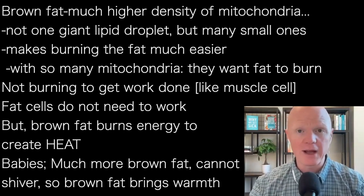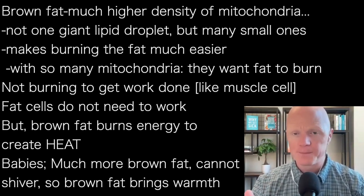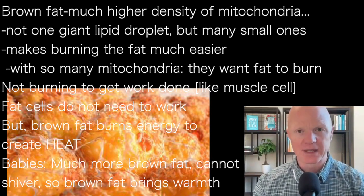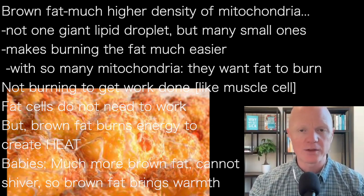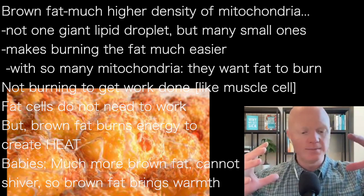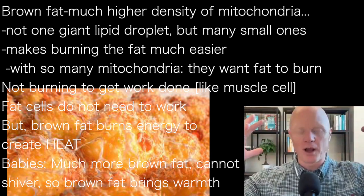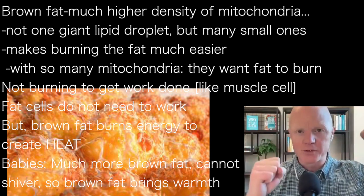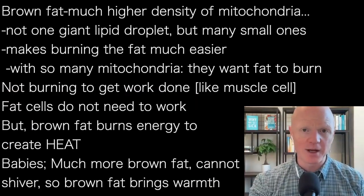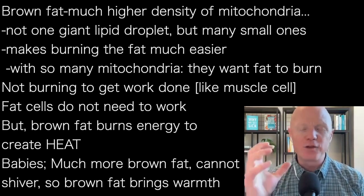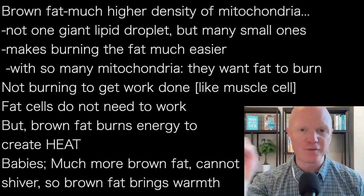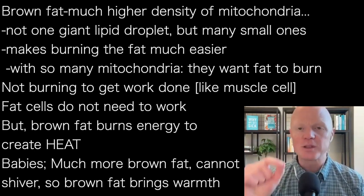Brown fat, as you might imagine, looks quite brown — kind of a reddish brownish hue. That's reflective of a much higher density of mitochondria, which do tend to stain or reflect a bit of a ruddy brownish appearance. If you look within the brown fat cells, you don't have one big blob of fat or one massive lipid droplet — you have countless small little lipid droplets. That's an advantage metabolically for a cell that wants to burn fat, because if you have a lot of smaller lipid droplets, you have much more surface area where you can come in and start pulling the fat off to burn.